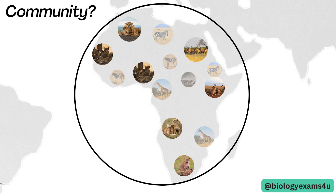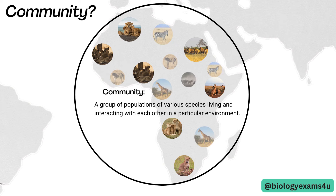All these different populations residing in this particular national park can be called a community. In other terms, a group of populations of various species living and interacting with each other in a specific environment makes a community. A community is a mix of populations of different species that live in a particular area.